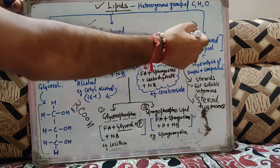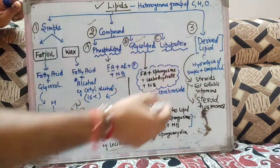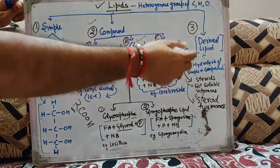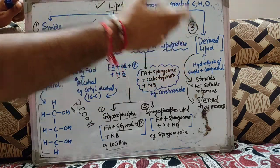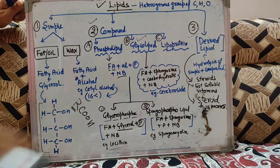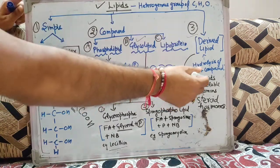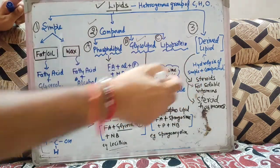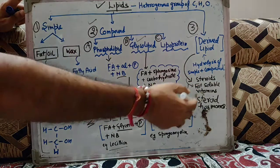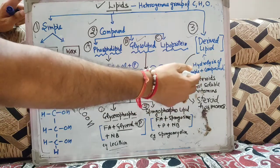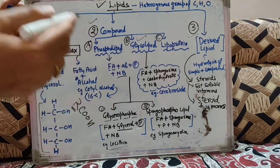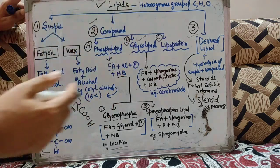Third category हमारे पास है derived lipids. Derived lipids क्या होते हैं — derived lipids are those lipids which are produced from the hydrolysis of the simple and compound lipids. ये simple and compound lipids की hydrolysis से बने हुए होते हैं. Examples हम derived lipids में दे सकते हैं: steroids, fat soluble vitamins, और steroid hormones — ये सारे derived lipids में आ जाएंगे.